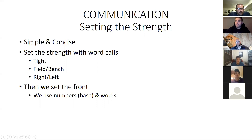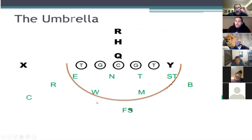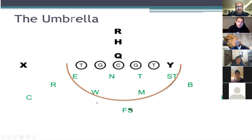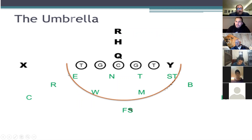After we set the strength call, we then set the front — we do it two ways, through numbers and through words. Before I get into that, I want to talk about the underlying principles — the run fits. The concept of the umbrella came to me from Joe Dana. He called it the umbrella but he got it from somewhere else too. We do a drill just like this so the kids understand the run fits and they're consistent.